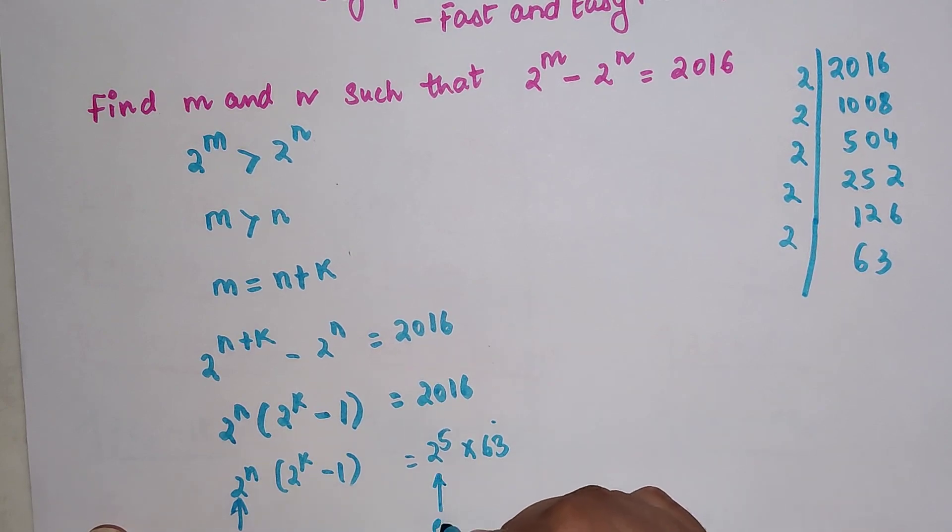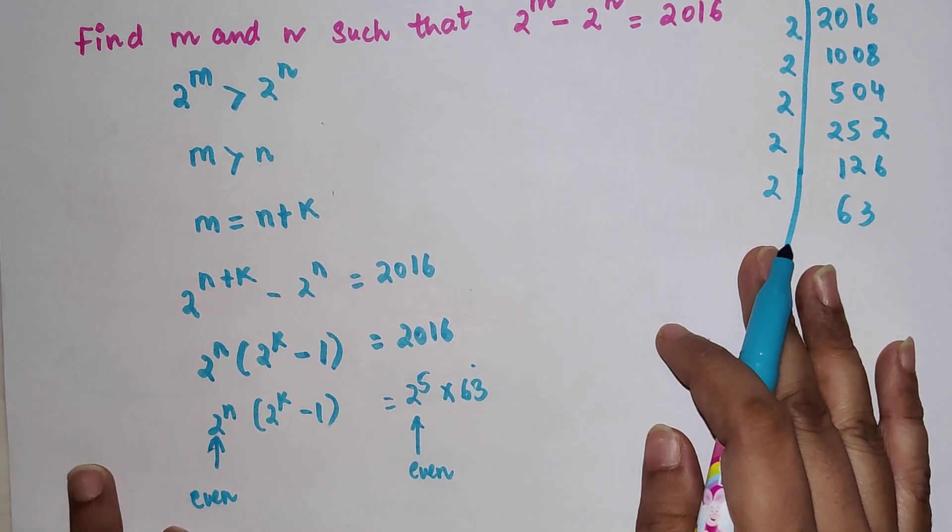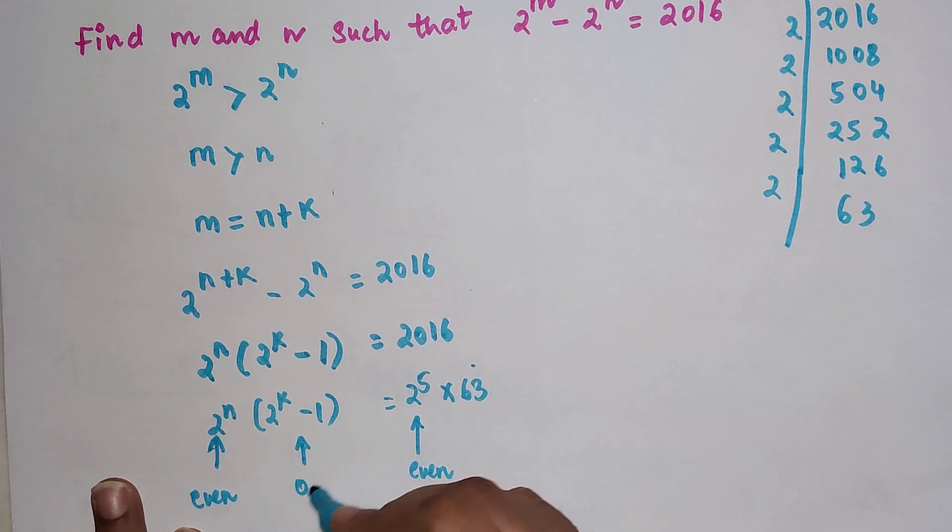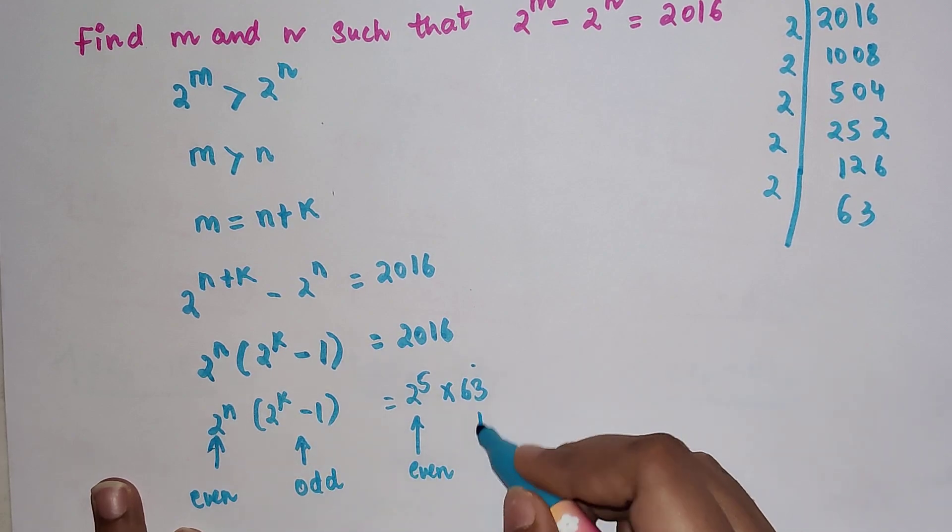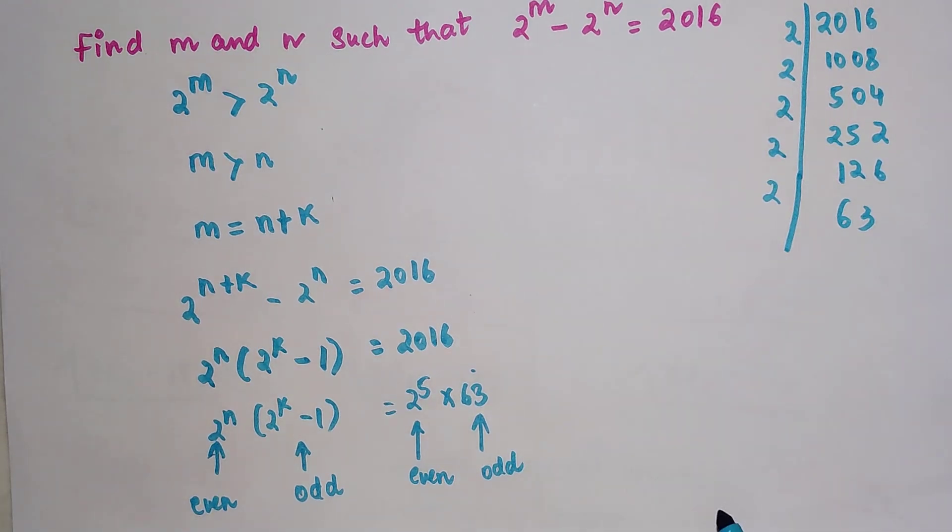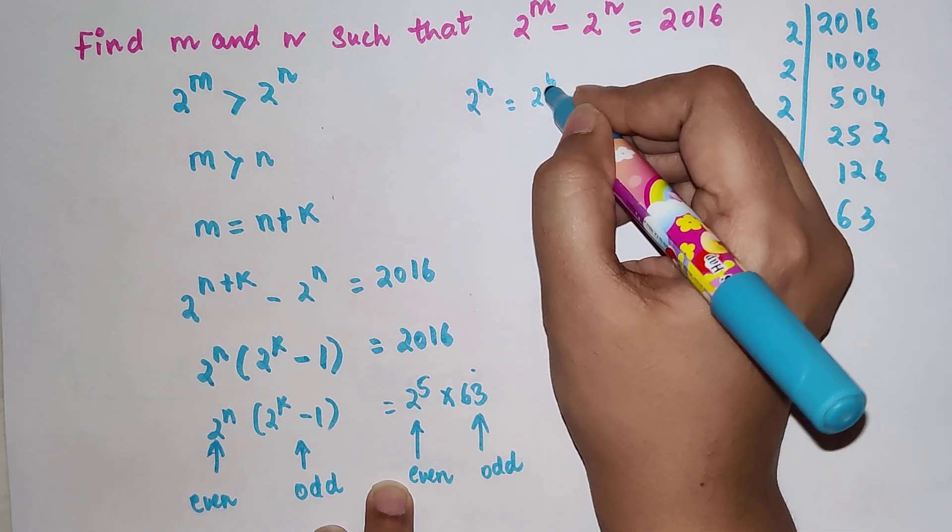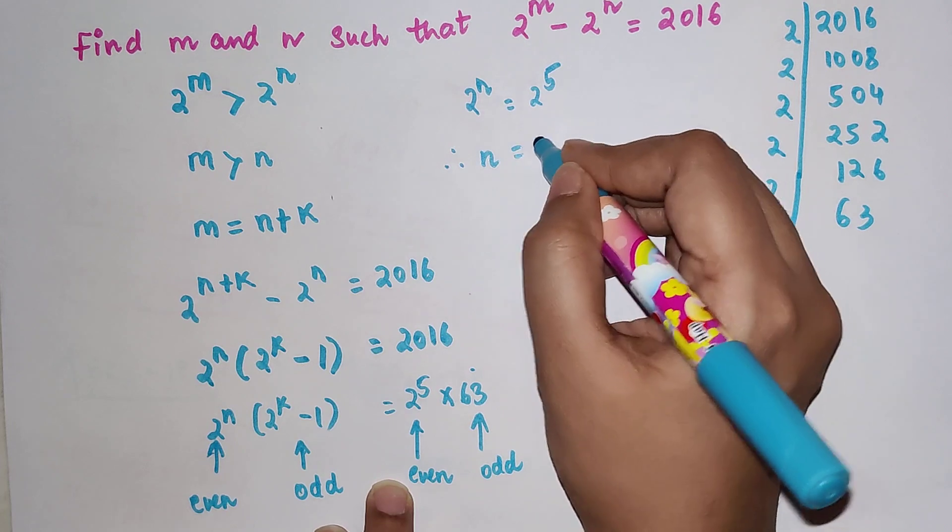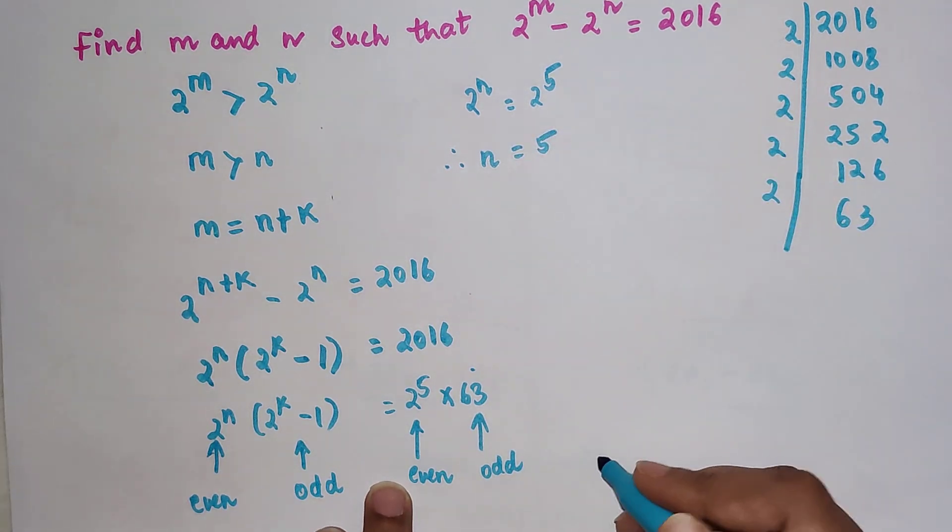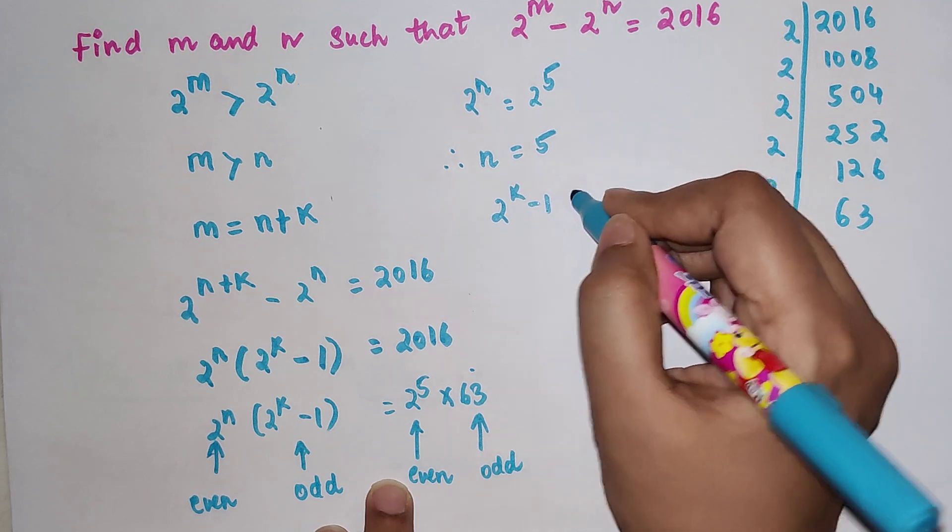Similarly, 2 raise to any value, when you subtract 1 from it, that will always get you an odd value, and this is again an odd number. So here from this I can say that 2 raise to n is equal to 2 raise to 5, therefore n is equal to 5.